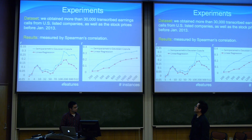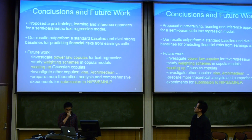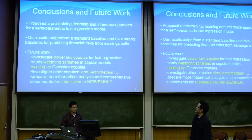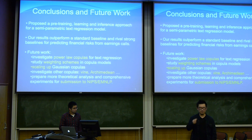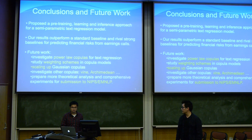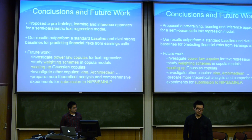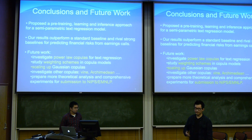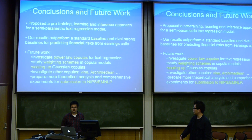To conclude, we propose an interesting pre-training, learning, and inference approach for our novel semi-parametric text regression model, and show that it outperforms standard baselines. In our paper and poster on Wednesday, we show more results comparing to support vector regression, which is a somewhat stronger baseline. We also plan to continue this line of work — for example, looking at specific copulas for text data, how to scale up the Gaussian copula, and exploring different rating schemes and topics.